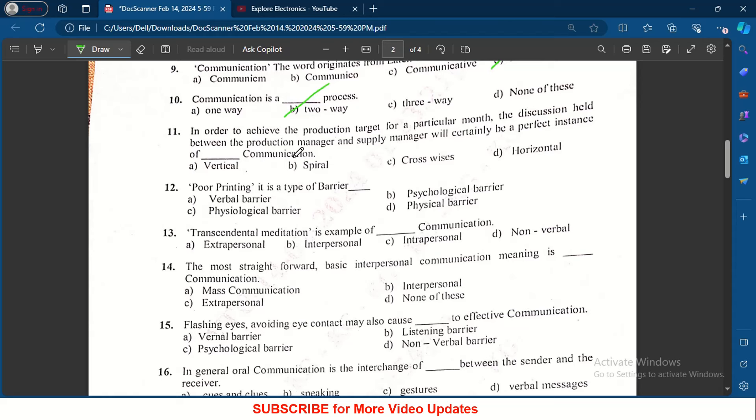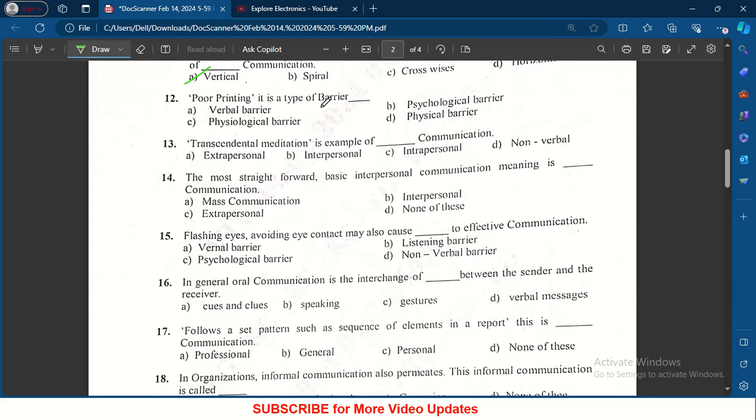In order to achieve the production target for a particular month, the discussion held between the production manager and supply manager will certainly be a perfect instance of dash communication - it is vertical communication. Poor printing is a type of barrier dash - it is a physical barrier. Transcendental meditation is example of dash communication - it is intrapersonal communication.